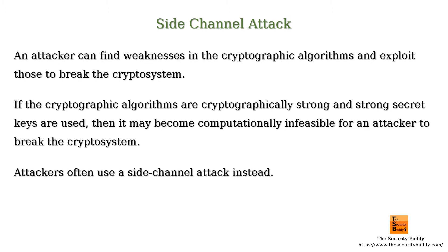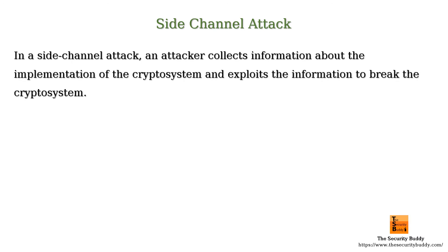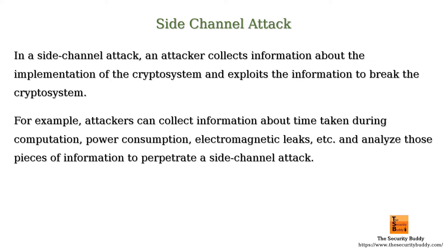So, attackers often use a side channel attack instead. In a side channel attack, an attacker collects information about the implementation of the cryptosystem and exploits the information to break the cryptosystem. For example, attackers can collect information about time taken during computation, power consumption, electromagnetic leaks, etc., and analyze those pieces of information to perpetrate a side channel attack.